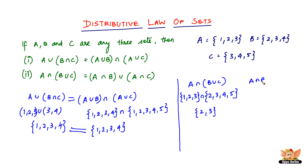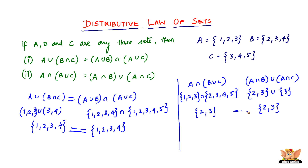Now let's compute A intersection B union of A intersection C. A intersection B will be {2, 3} since 2 and 3 are common. A intersection C will be just {3} since only 3 is common. So {2, 3} union {3} will be {2, 3}, which is the same. Therefore, the intersection operation is also proved to be distributive.